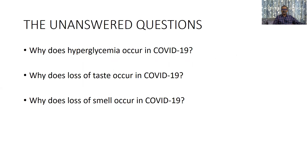The first unanswered question we come across regularly in adult ICUs is so-called uncontrolled diabetes causing severe COVID. Many times a person who is not even aware that he has severe diabetes lands up in the ICU with COVID, sugars are very high, and we label it as uncontrolled diabetes because insulin does not work very well. Very high doses of insulin are required, and the patient feels guilty for not taking medicine previously. So the question is: does COVID cause hyperglycemia, or does hyperglycemia cause severe COVID?